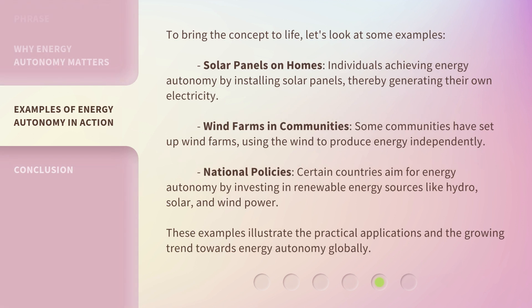To bring the concept to life, let's look at some examples. Solar Panels on Homes: individuals achieving energy autonomy by installing solar panels, thereby generating their own electricity. Wind Farms in Communities: some communities have set up wind farms, using the wind to produce energy independently. National Policies: certain countries aim for energy autonomy by investing in renewable energy sources like hydro, solar, and wind power. These examples illustrate the practical applications and the growing trend towards energy autonomy globally.